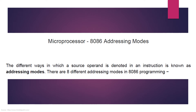Let's understand what addressing modes are. As we know, each instruction performs some particular operation, and this operation is normally on specific data, also called the operand. This data and operand normally resides in the register, memory, or the accumulator. So addressing mode is actually a way of locating the data or the operands. There are different ways in which a source operand is denoted in an instruction, and we call it an addressing mode.